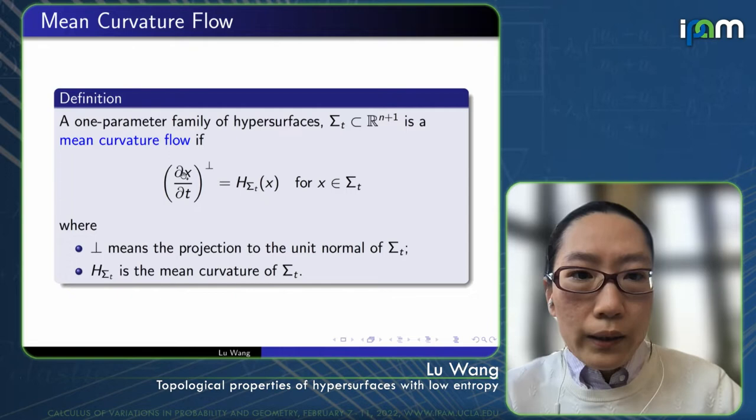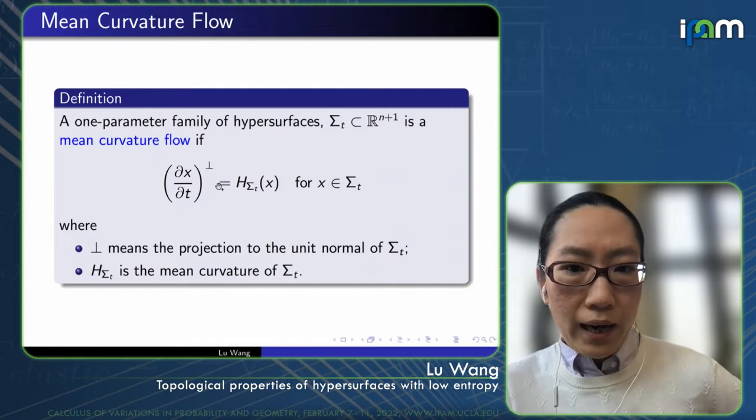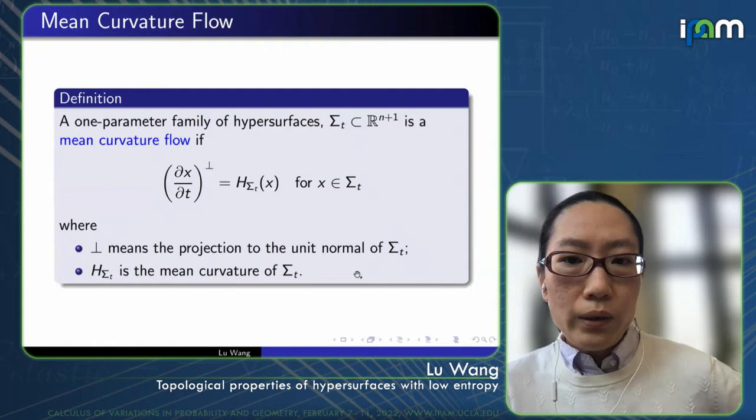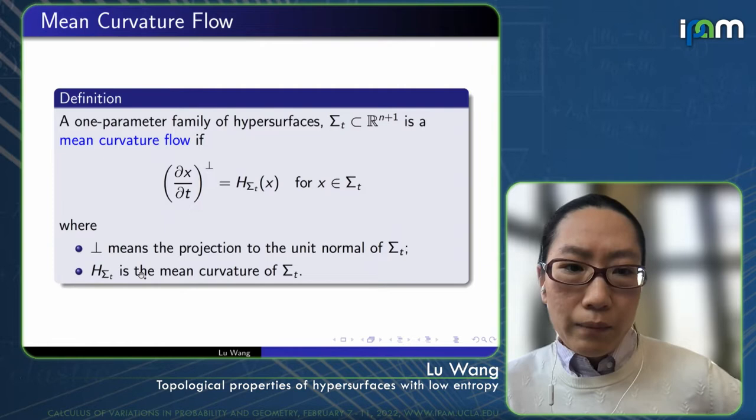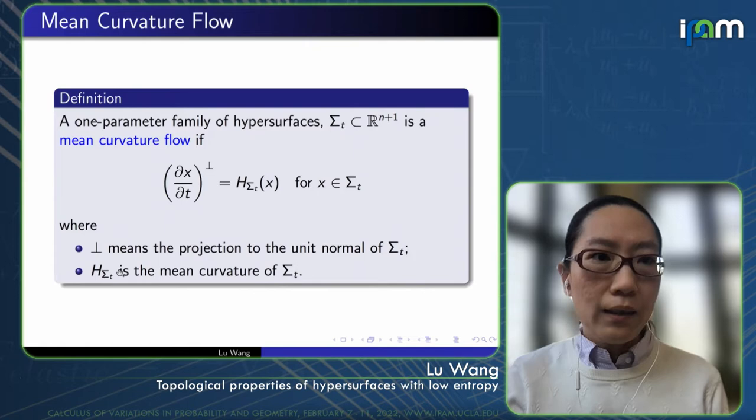A one-parameter family of hypersurfaces in Euclidean space is called a mean curvature flow if it satisfies a parabolic differential equation. The superscript ⊥ means taking projection of this velocity vector to the unit normal of this evolving hypersurface Σ_t, and H_{Σ_t} denotes the mean curvature vector. For this talk, we don't need to worry about the precise definition of mean curvature vector.